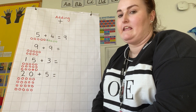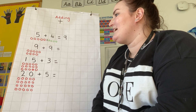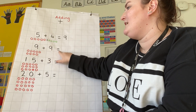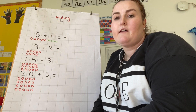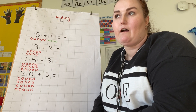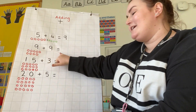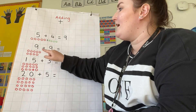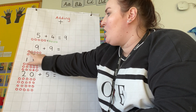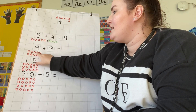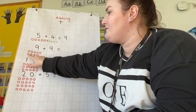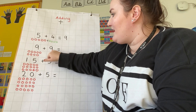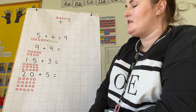We're going to move on to the next one: nine add nine equals. It's really important that before you start working out your number sentence, you read the whole thing through first so you know what you're doing. I've represented my number nine: one, two, three, four, five, six, seven, eight, nine.